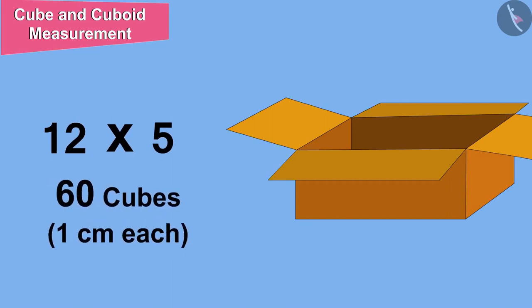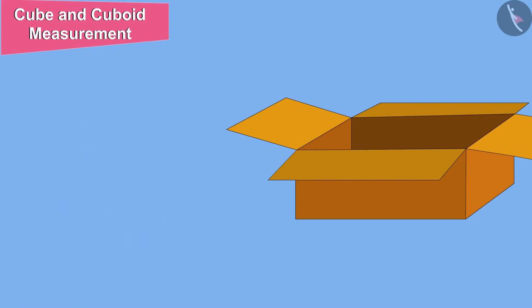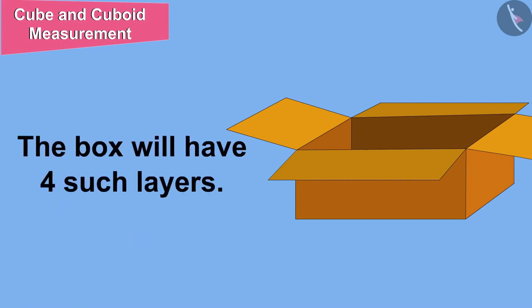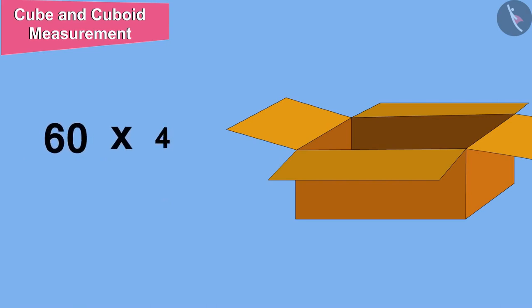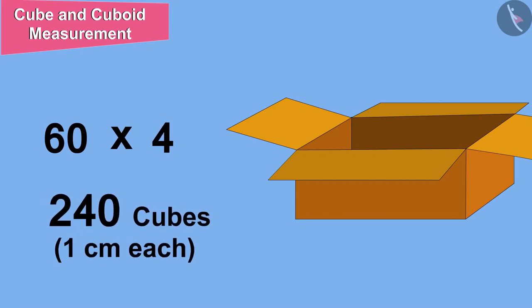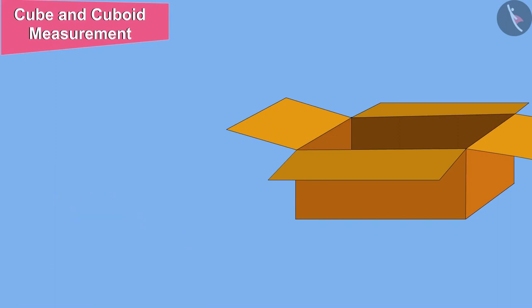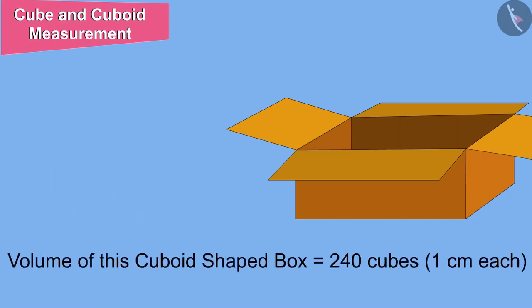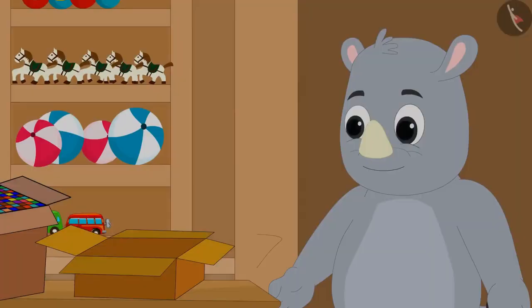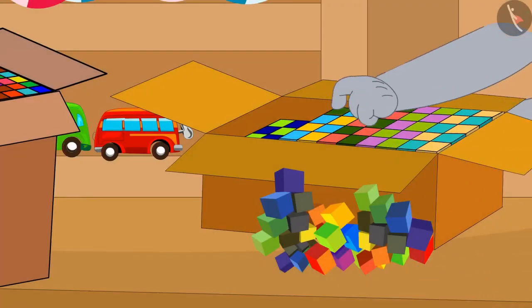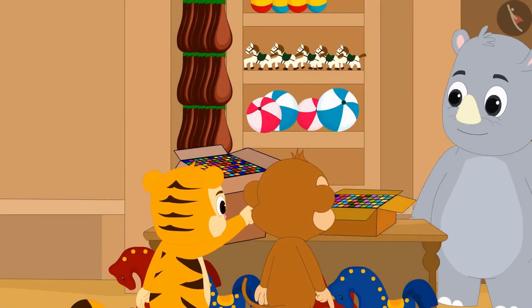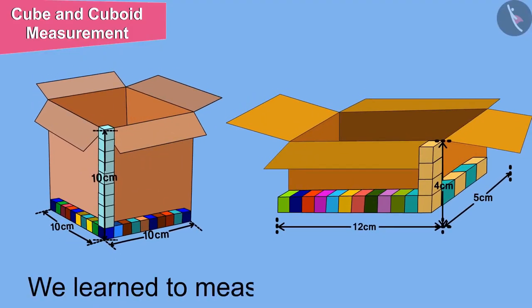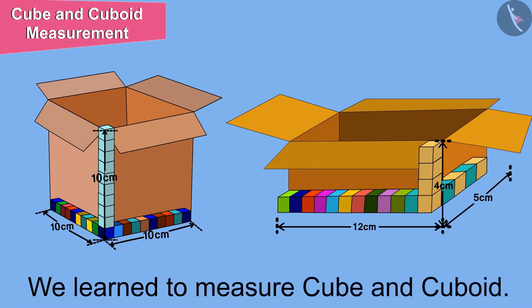Because the box has 4 such layers, it will have a total of 60 times 4, that is 240 cubes of 1 cm each. In other words, the volume of this cuboid shaped box is equal to 240 cm³. Gagu filled the blocks in his new cuboid box and his blocks became even more popular. In the next video, we will learn more through some interesting examples.